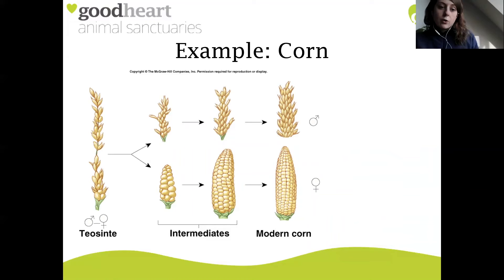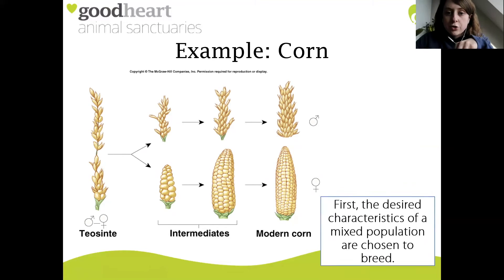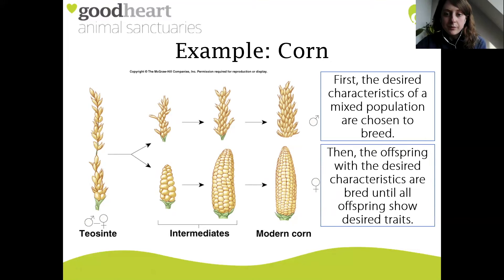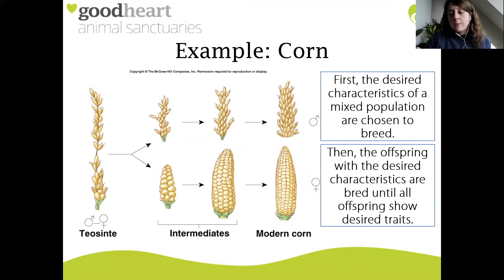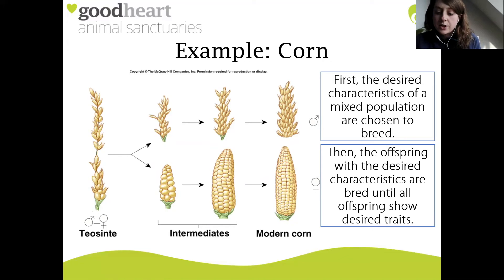Here's a breakdown of the whole process. On the left you can see the wild variety of corn - we've got the male and the female plant. When you breed them together, you look for desired traits. The desired characteristics of a mixed population are chosen to breed - here we're looking for a high yield plant. Once you've bred your first generation, you select those offspring which exhibit the desired traits and breed them together, hoping that with each subsequent generation those traits become more and more pronounced. Over hundreds or even thousands of years, you go from this plant to a dramatically different modern variety.